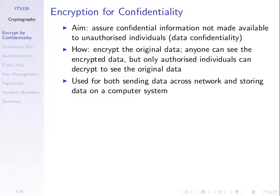The aim is to make sure our confidential information is not made available to unauthorised people. We encrypt the original data, and we assume anyone can see that encrypted data. But the encryption is such that only the authorised people will be able to decrypt and see the original data. Once it's encrypted, that data can be made available to anyone in the world, but only those who are authorised can decrypt and get the original data back.